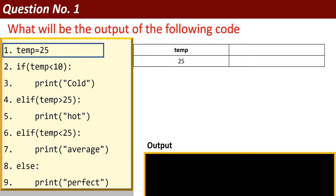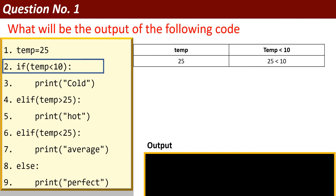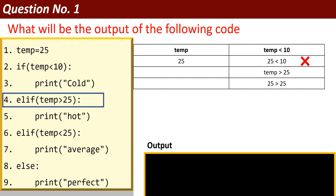First, the statement temp = 25 is an assignment statement; 25 is assigned to the variable named temp. Next, on line number two there is a condition: if temp is less than 10. It will check this condition — if temp < 10, the value of temp is 25, and 25 is not less than 10, so this condition is false. Line number three will be ignored and it will move to line number four, elif.